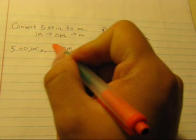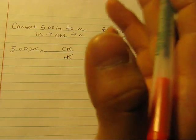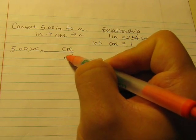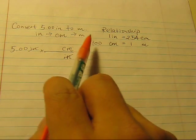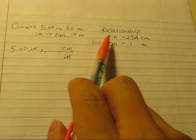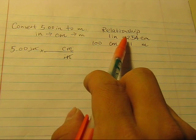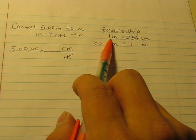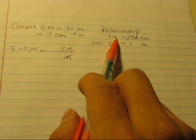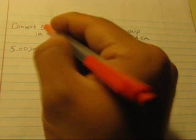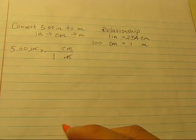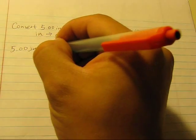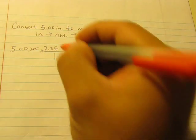We have the unit, but what about these two numbers? A lot of students wonder what numbers do we put down. Since these two units are coming from this relationship, the numbers are going to be from the relationship. You just put the number which is next to the unit into here. So you see one inch, you put one next to the inch. You see 2.54 next to the centimeters, you put 2.54 next to the centimeters.